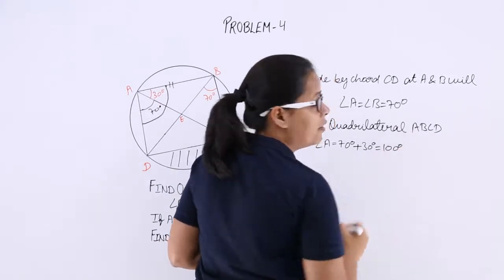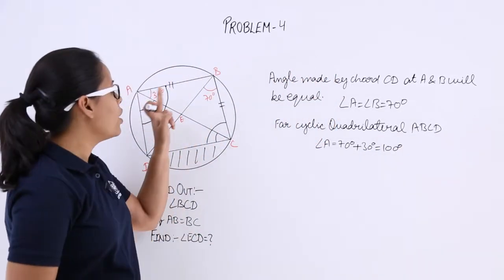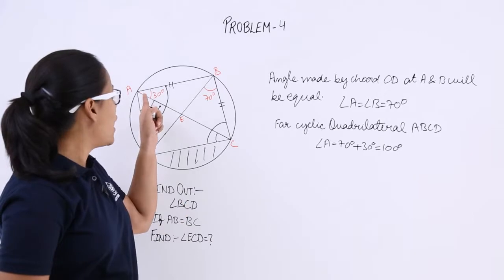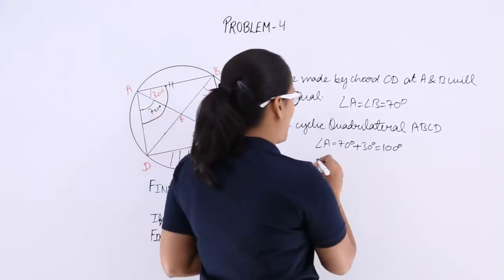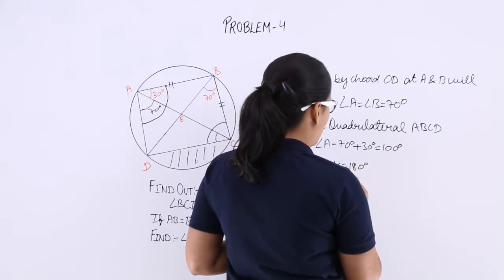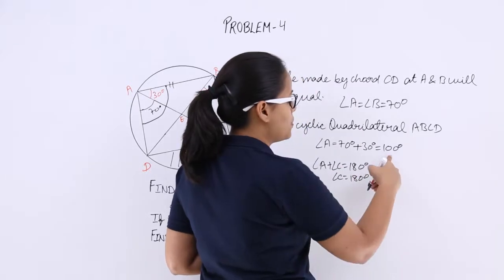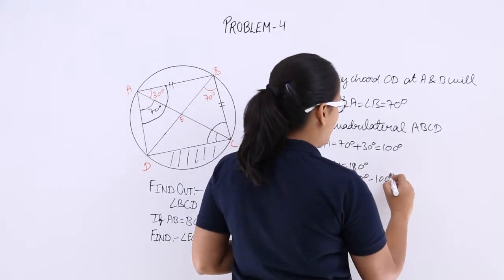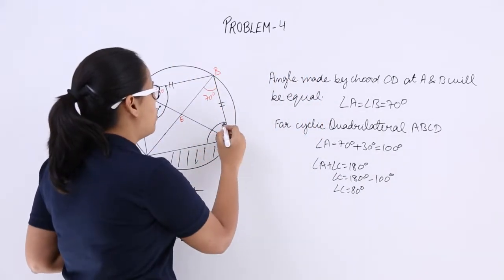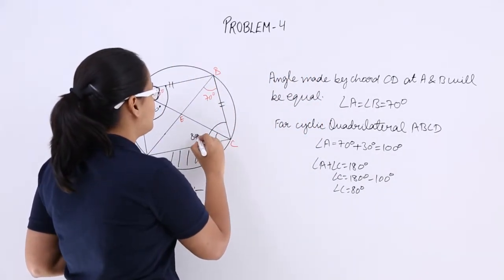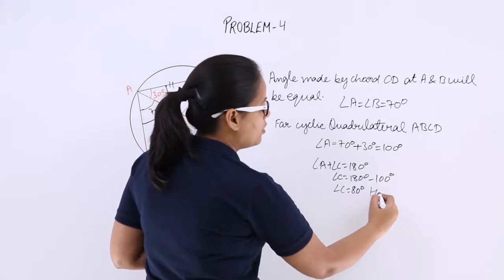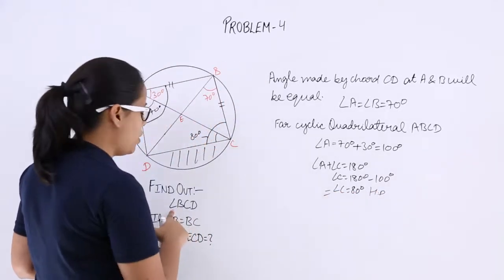This is equal to 100 degrees. And as you know, if this is a cyclic quadrilateral, the sum of opposite pairs of angles is equal to 180 degrees. So angle A plus angle C of this quadrilateral is equal to 180 degrees. So angle C will be 180 minus 100, which equals 80 degrees. This angle at C is equal to 80 degrees, which is also equal to angle BCD.